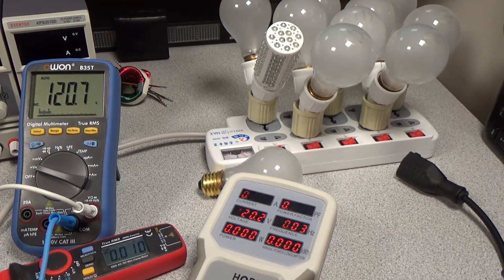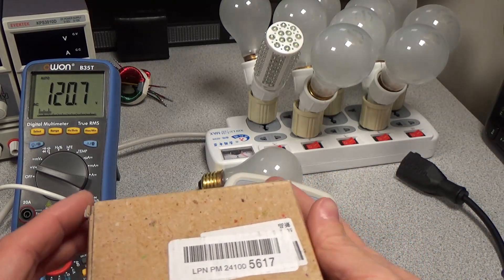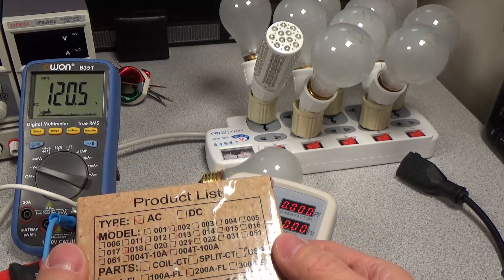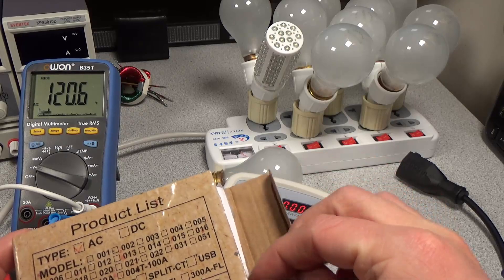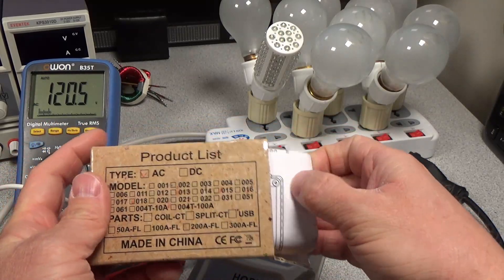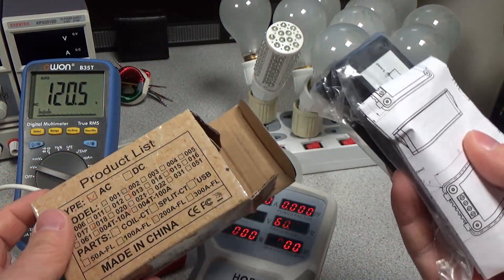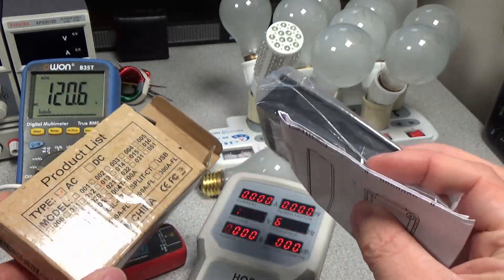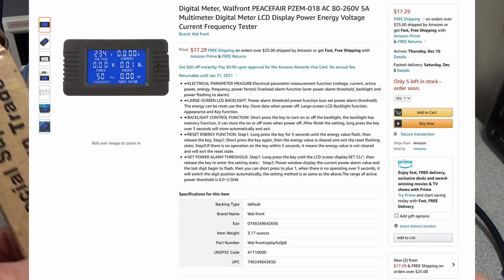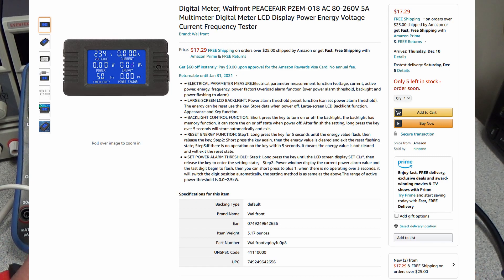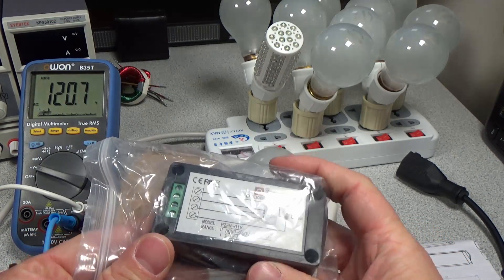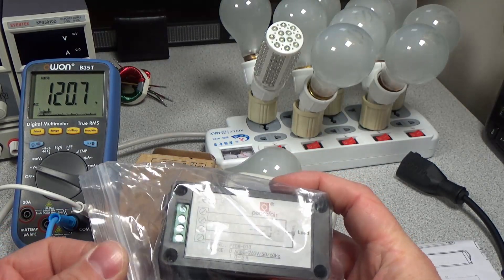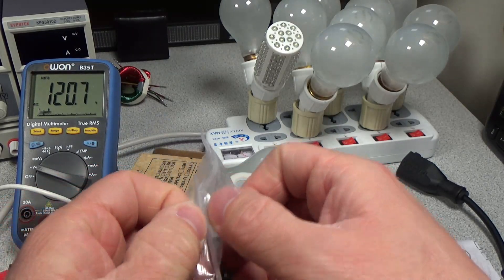So what I've got is a really inexpensive part. We'll see if it's going to fix the problem, maybe it's going to make it worse, I'm not sure. But you can get these from the usual suspects, eBay, Amazon, for very very little money. And so this one is specifically a 5 amp, 80 to 260 volt, 50, 60 hertz power meter.